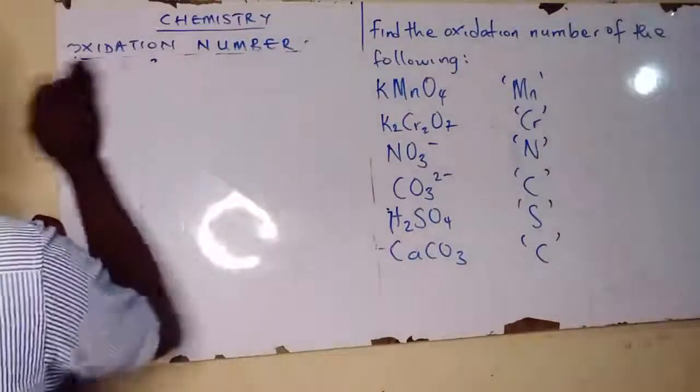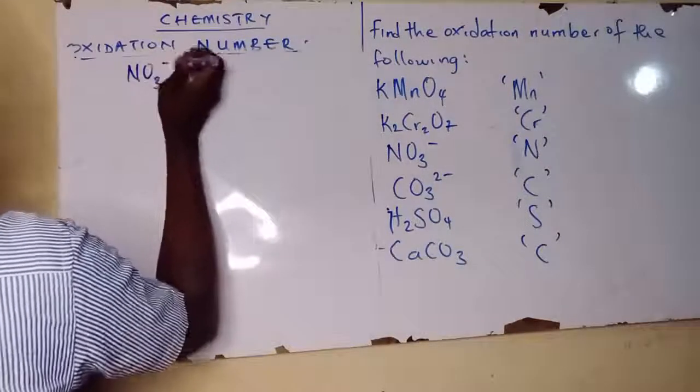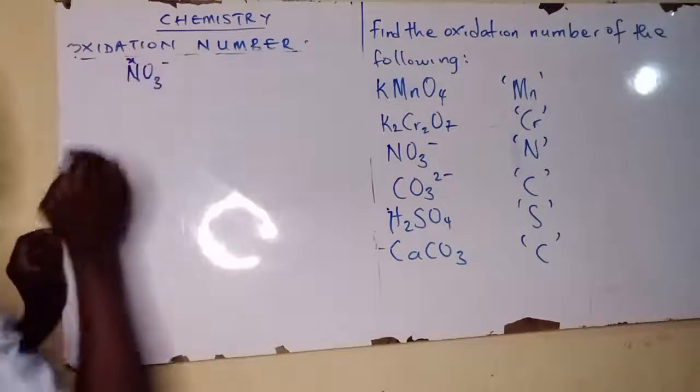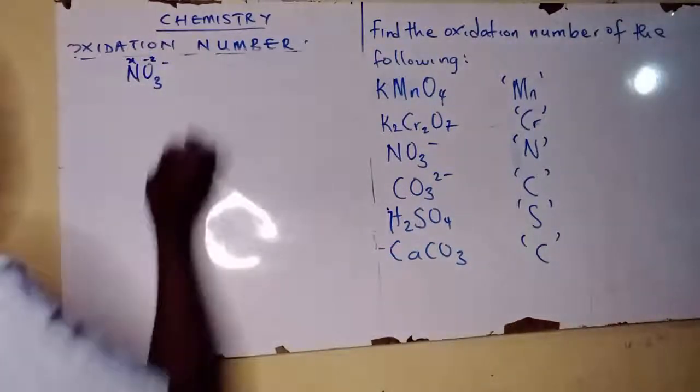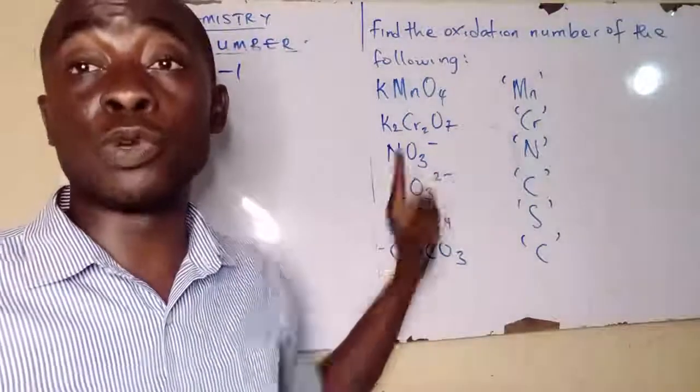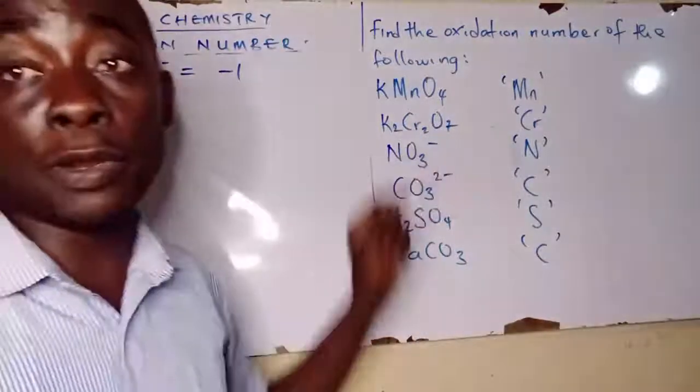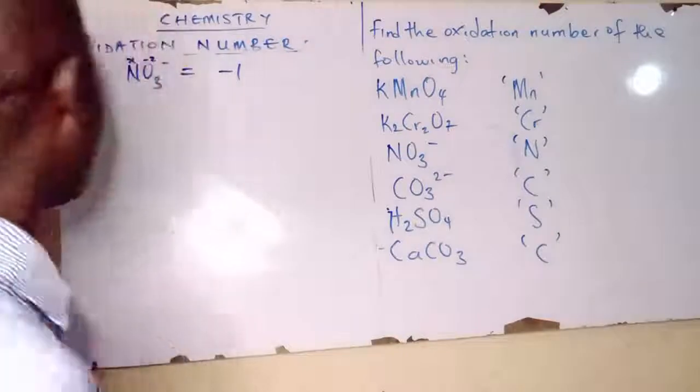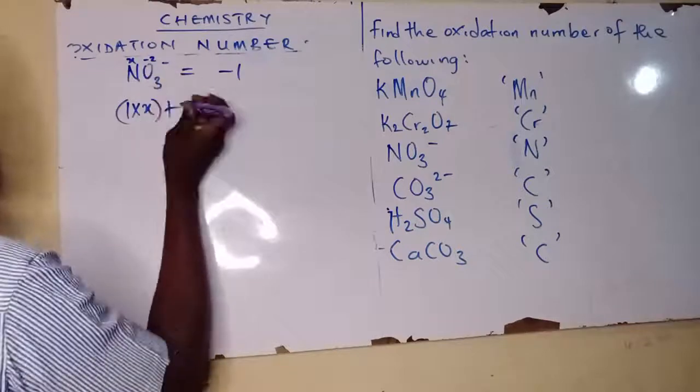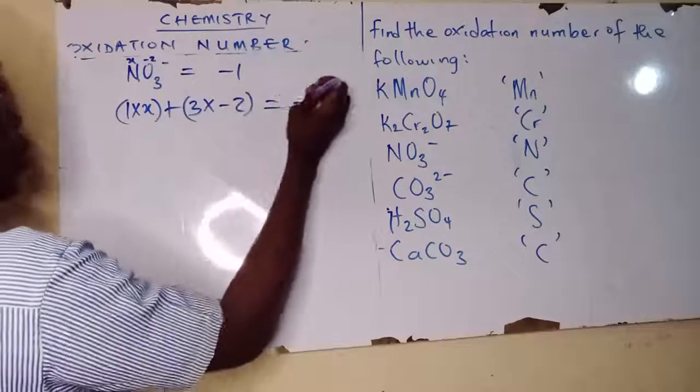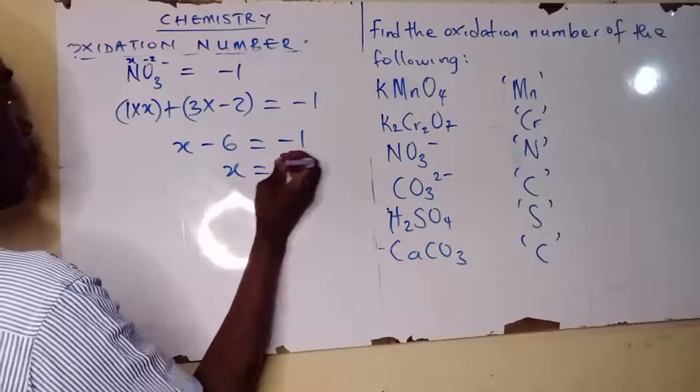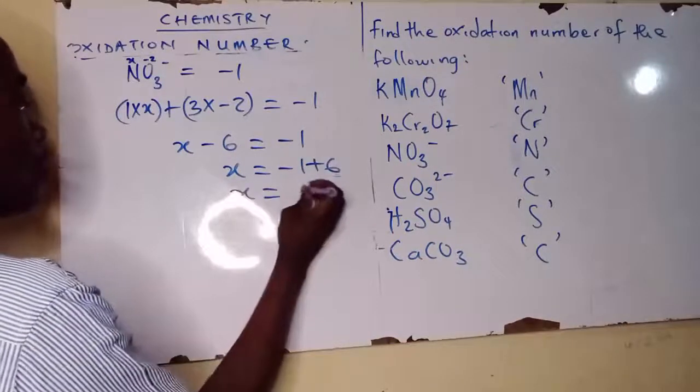Now NO3 minus. Nitrogen I am going to tag it as x, oxygen is minus 2. Everything equals to minus 1, so I can say x minus 6 equals to minus 1. X is equal to minus 1 plus 6, x is about 5.